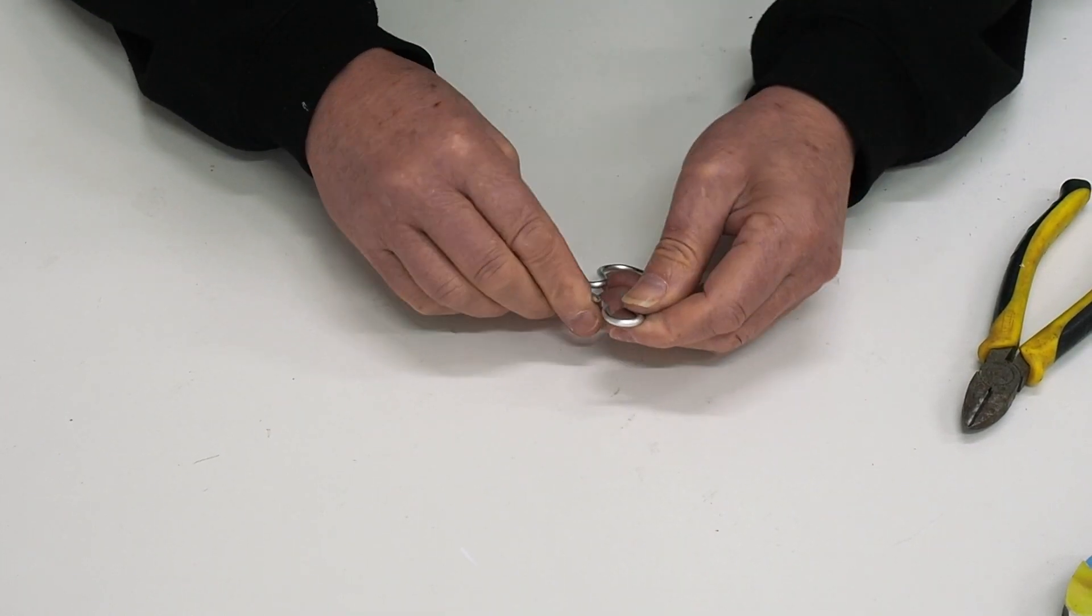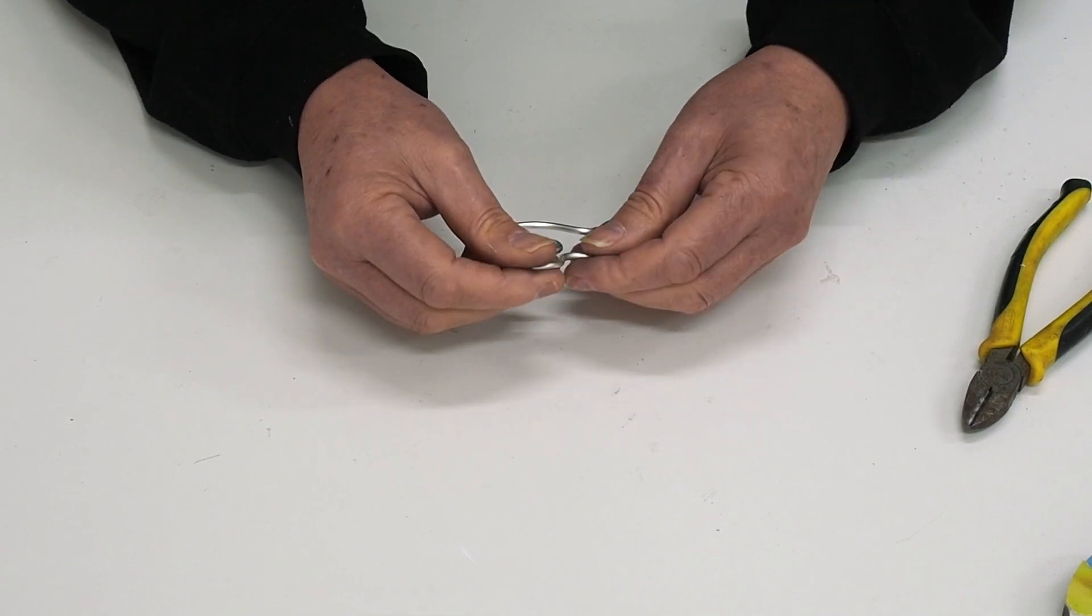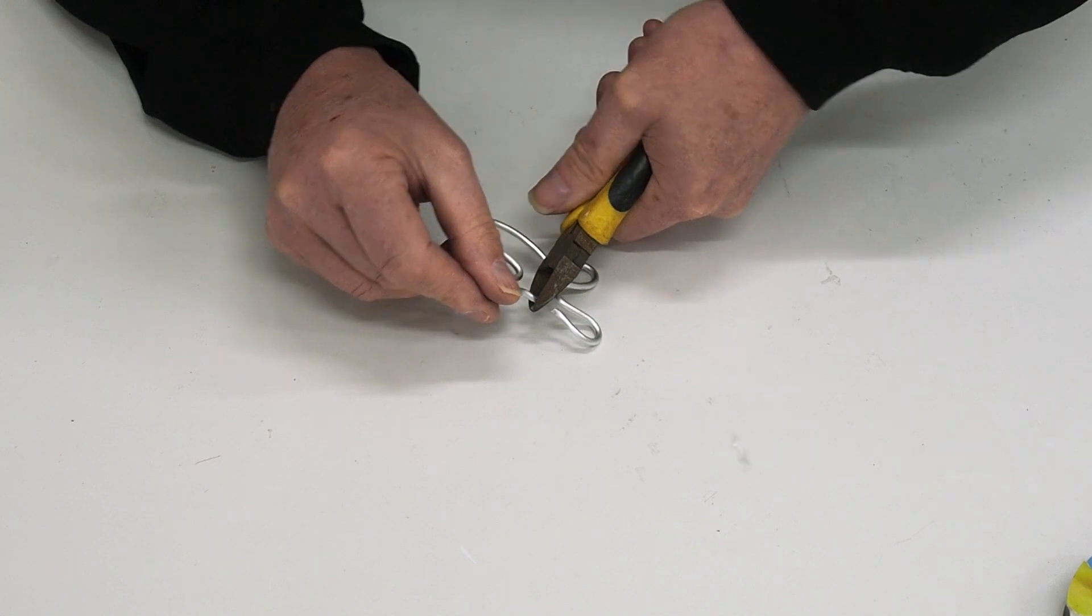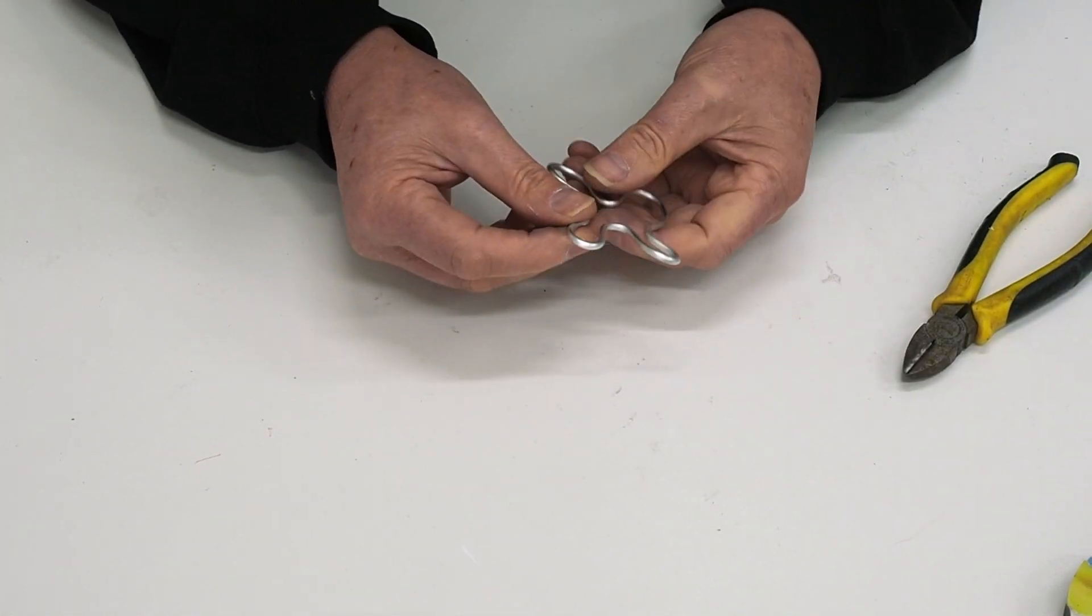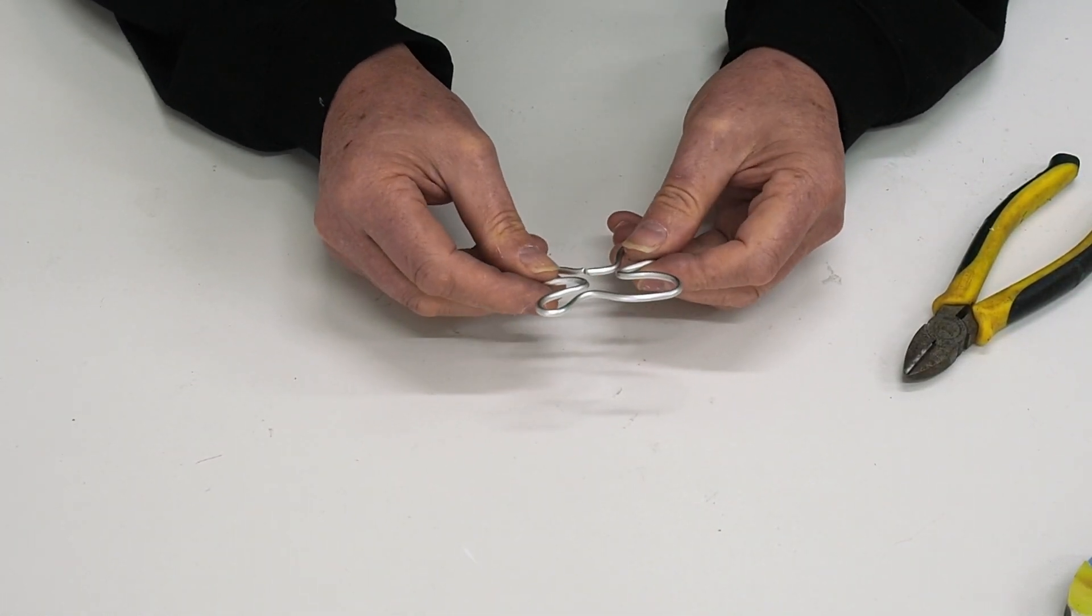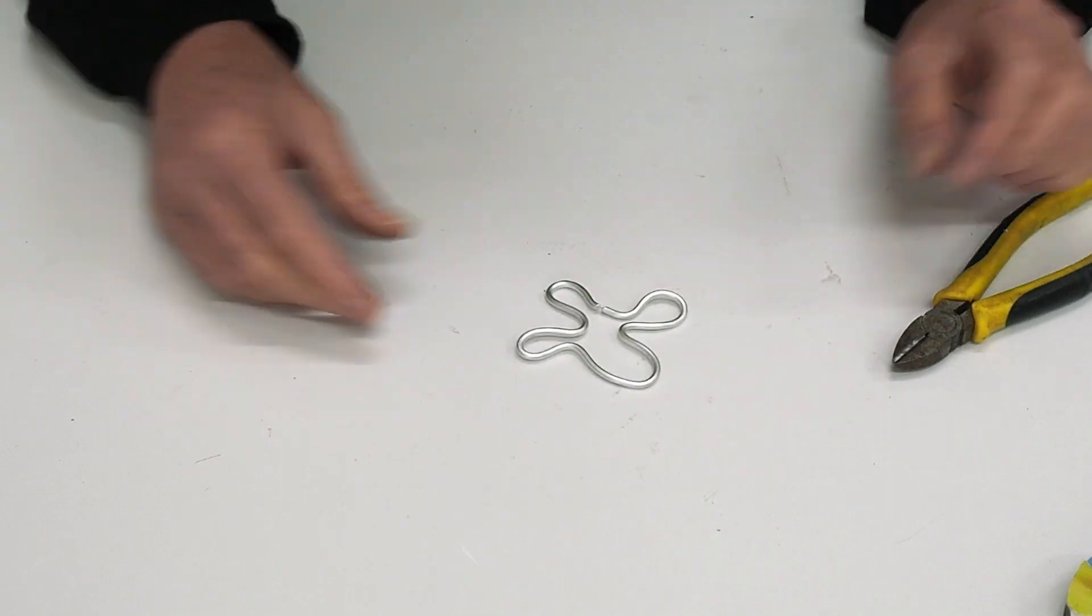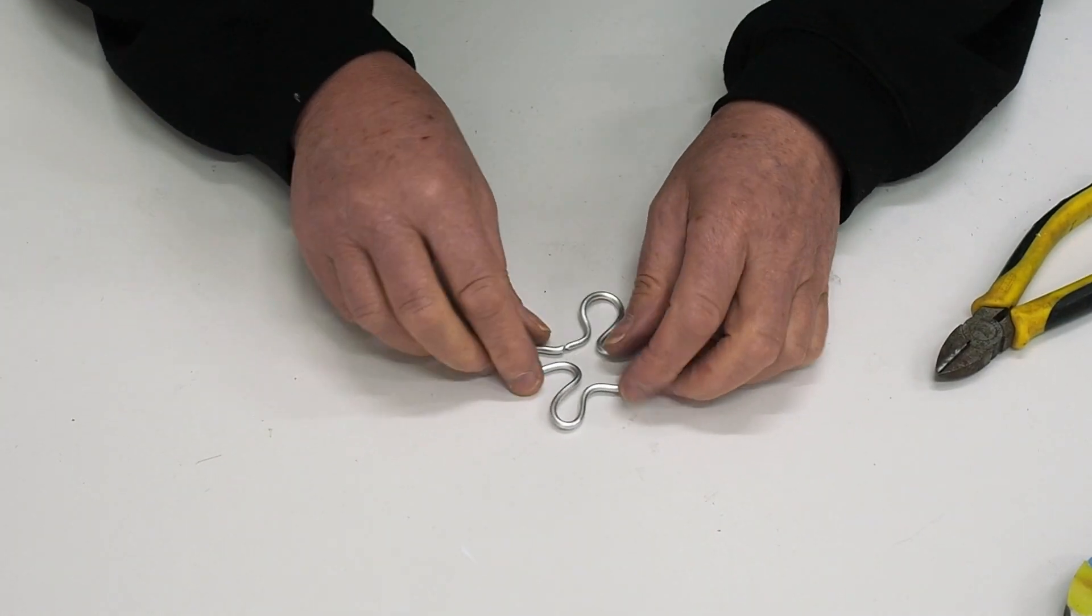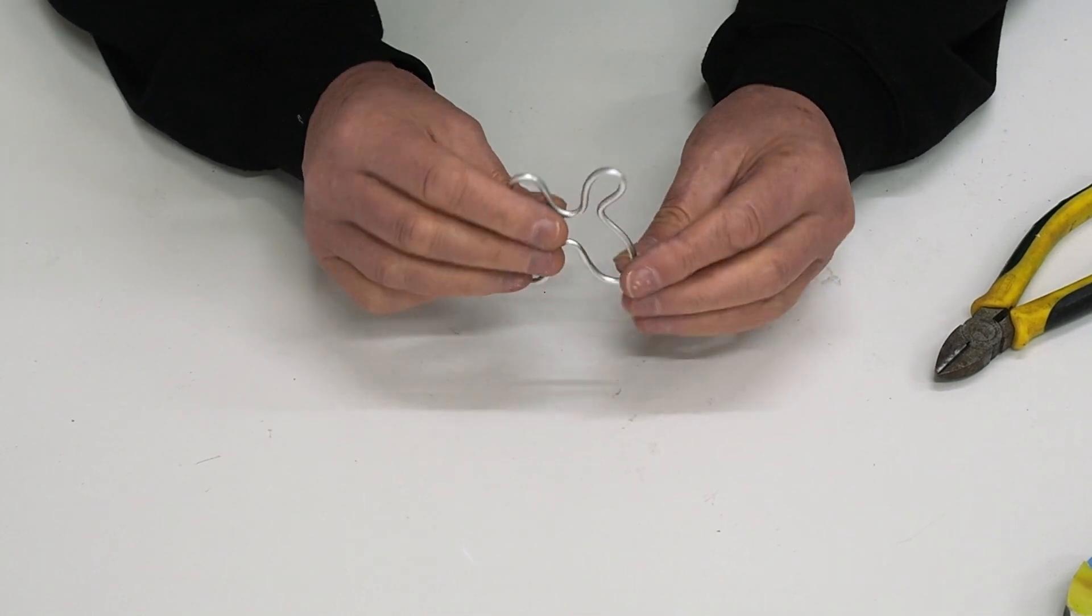I'm just going to cut that off there and just bring that in a bit further. Then once we've got it the shape of the flower that we want, because we've been bending it, it's going to be quite uneven—it's not going to be flat.